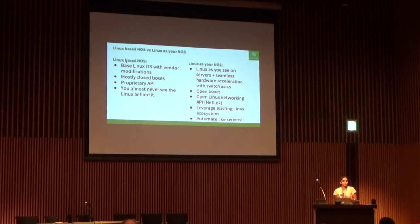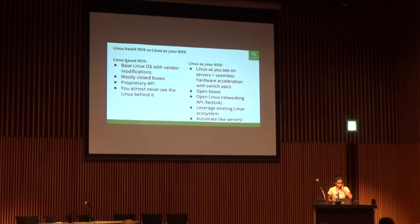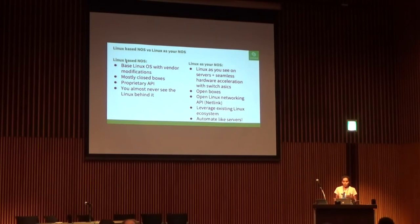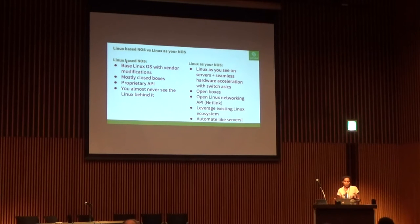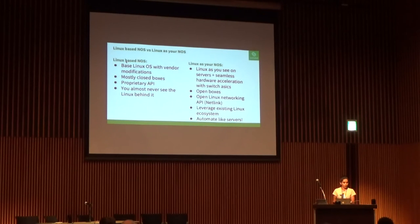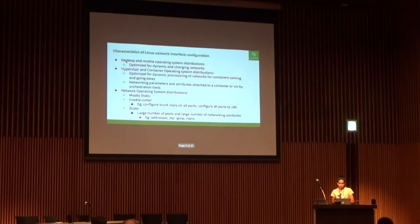This slide talks about the Linux-based NOS. We all know that every network device today uses Linux in some way, but mostly they are closed boxes with proprietary APIs, a CLI, black boxes. What Cumulus started with is making Linux your NOS — the same Linux you run on the server, accelerated using the switch ASIC. We are targeting open boxes, using the Linux API — mainly Netlink — as your networking API, and automating routers and switches like your servers.